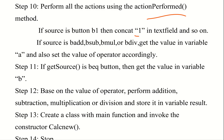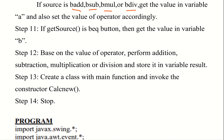We need to encapsulate the text field to get the value, store the value in variable A, and also set the value of operator accordingly. The value of operator can be plus, minus, multiply, or divide, and the operation is performed. The result will be stored in the variable result. Then create a class with a main function and invoke the constructor CalcNew.